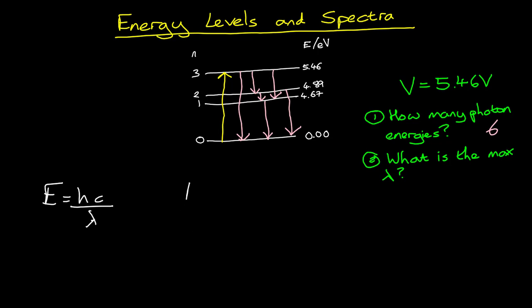So using our equation hf photon energy equals E1 take away E2, we can find that the minimum photon energy that can be produced in this situation is 4.89 take away 4.67, which is 0.22 electron volts. Now we need to convert that into joules, so that's going to be 0.22 multiplied by 1.6 times 10 to the minus 19, which gives us a photon energy in joules of 3.52 times 10 to the power of minus 20.